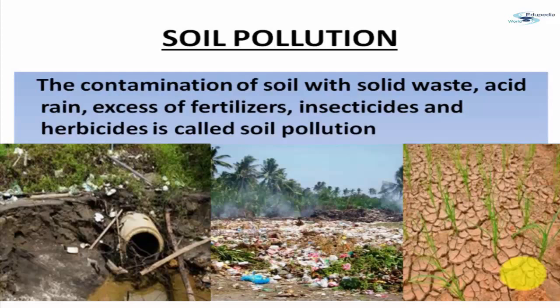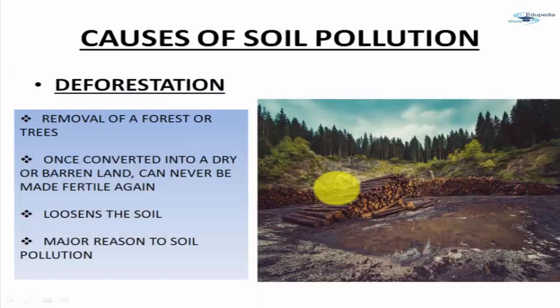Soil pollution is the contamination of soil with solid waste, acid rain, excess of fertilizers — that is the waste from agriculture — insecticides and herbicides. And what happens because of continuous soil pollution? The soil may become infertile.